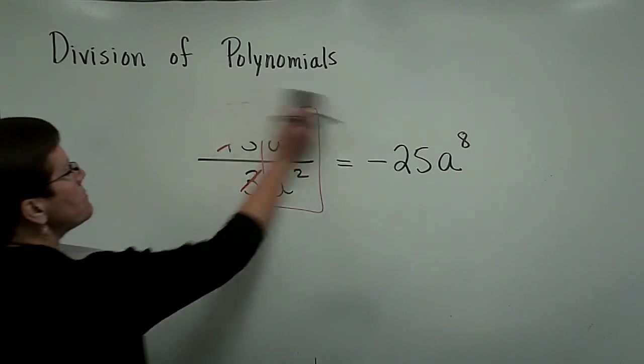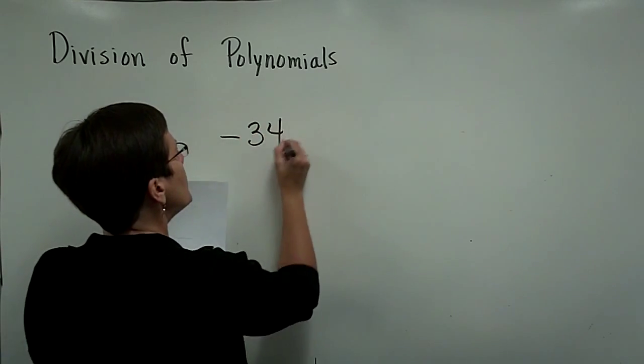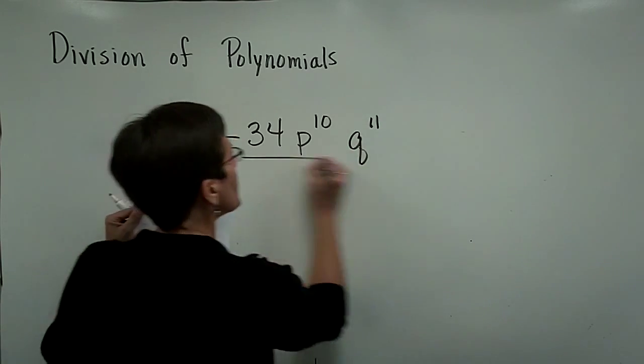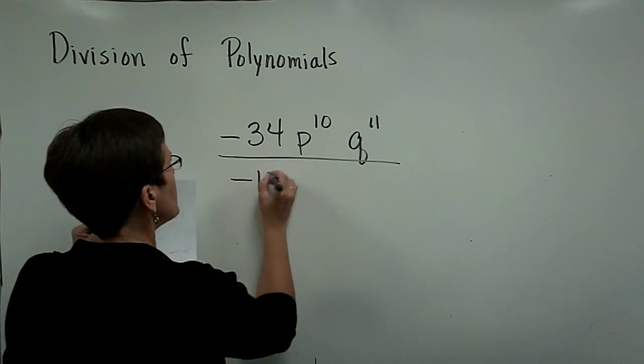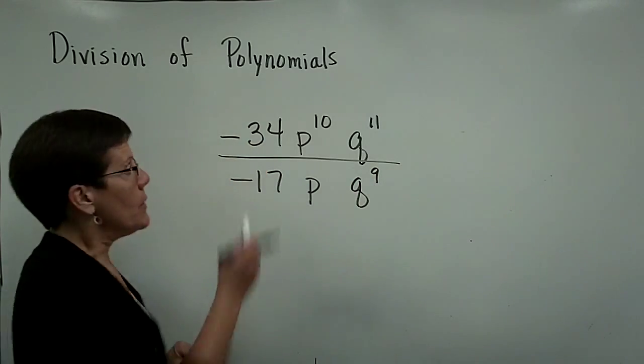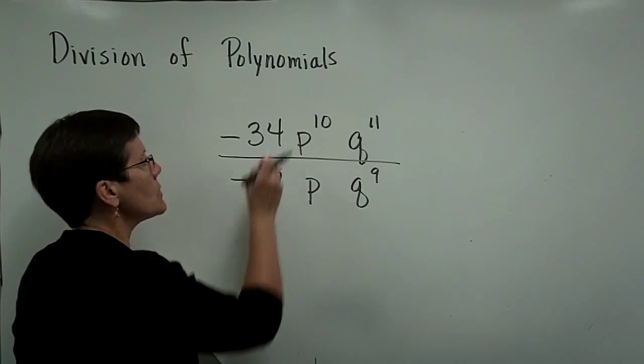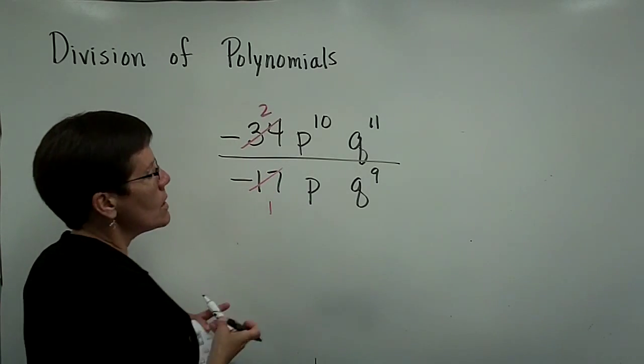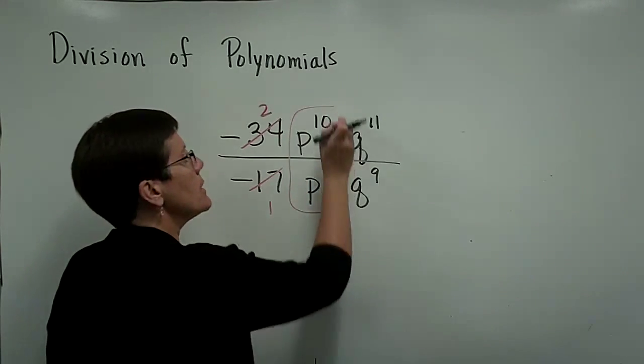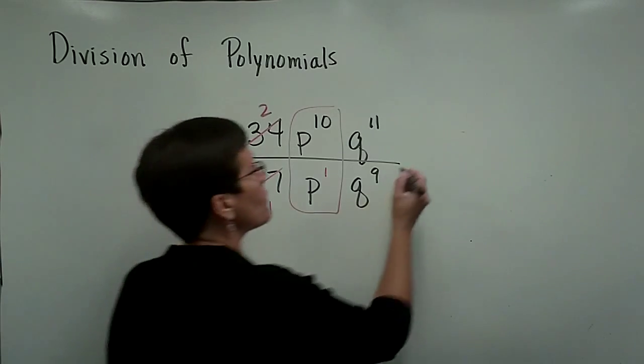Let's look at one more. A monomial divided by a monomial. And so I have a negative 34 p to the tenth, q to the eleventh, and I want to divide that by a negative 17 p q to the ninth. So these two coefficients, a negative divided by a negative is positive, and 17 goes into here once and into here two times. This one has an exponent of 1. So these have like bases, and 10 minus 1 is 9. That will be a p to the ninth power. Let's start writing down our answer.